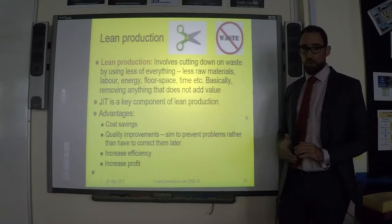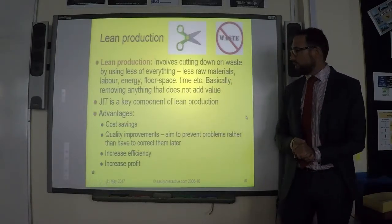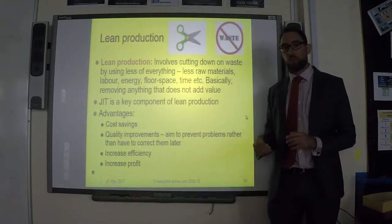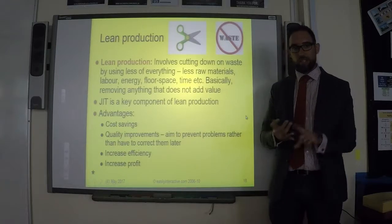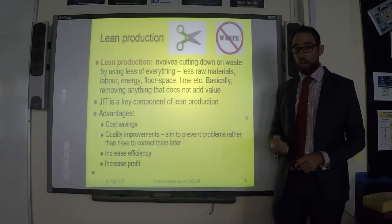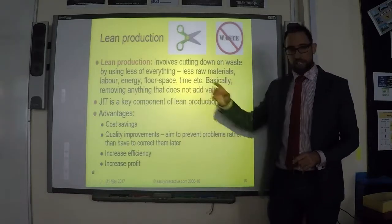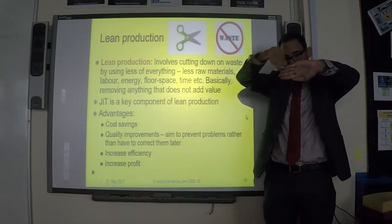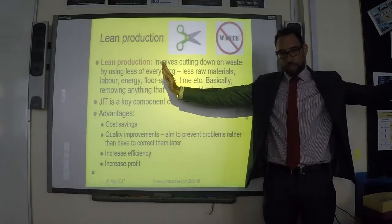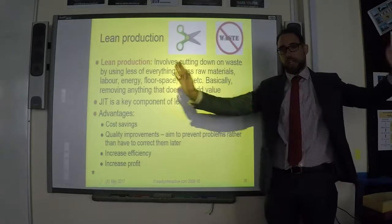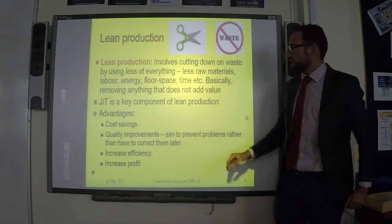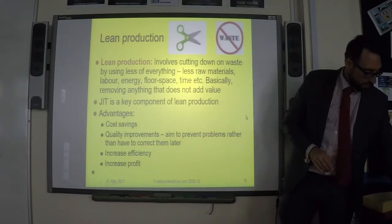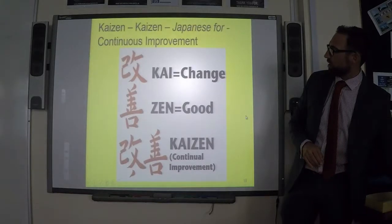An example of lean production: rather than using labor, we could replace workers with machines, which are faster, make fewer mistakes, and are more efficient. Another example is using less floor space — if you have two machines that are far apart, bring them together. That's more efficient because you're wasting less time walking from one machine to the next. Anything that cuts down waste is part of lean production.